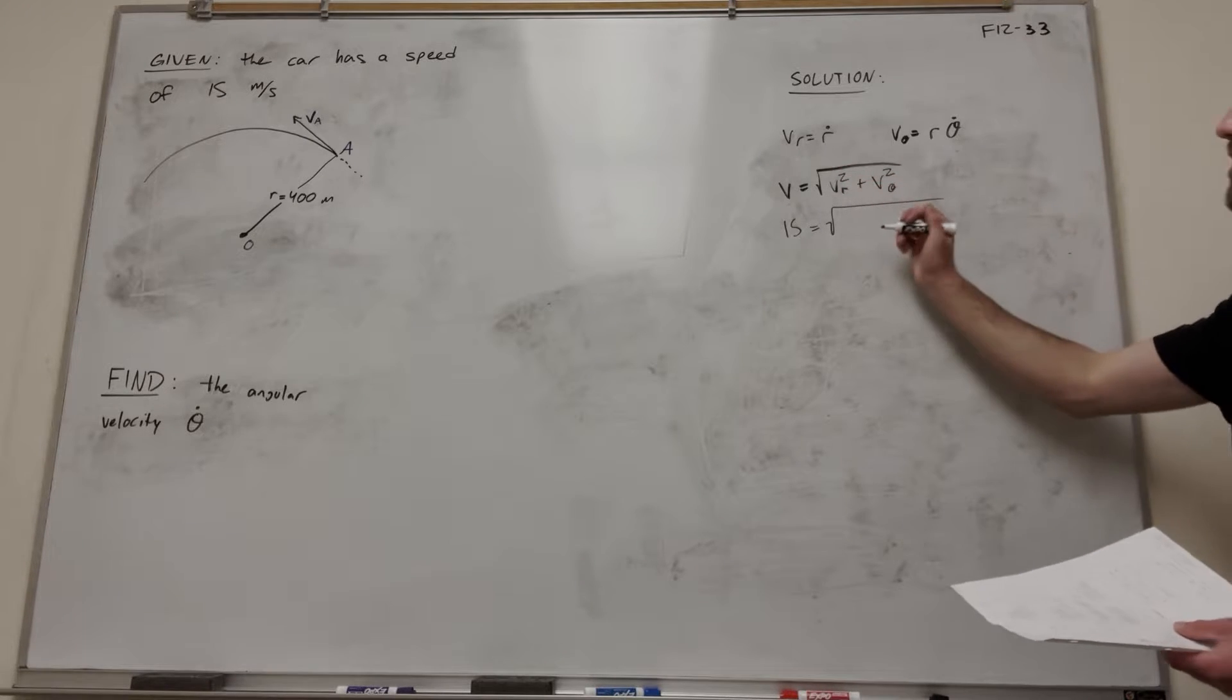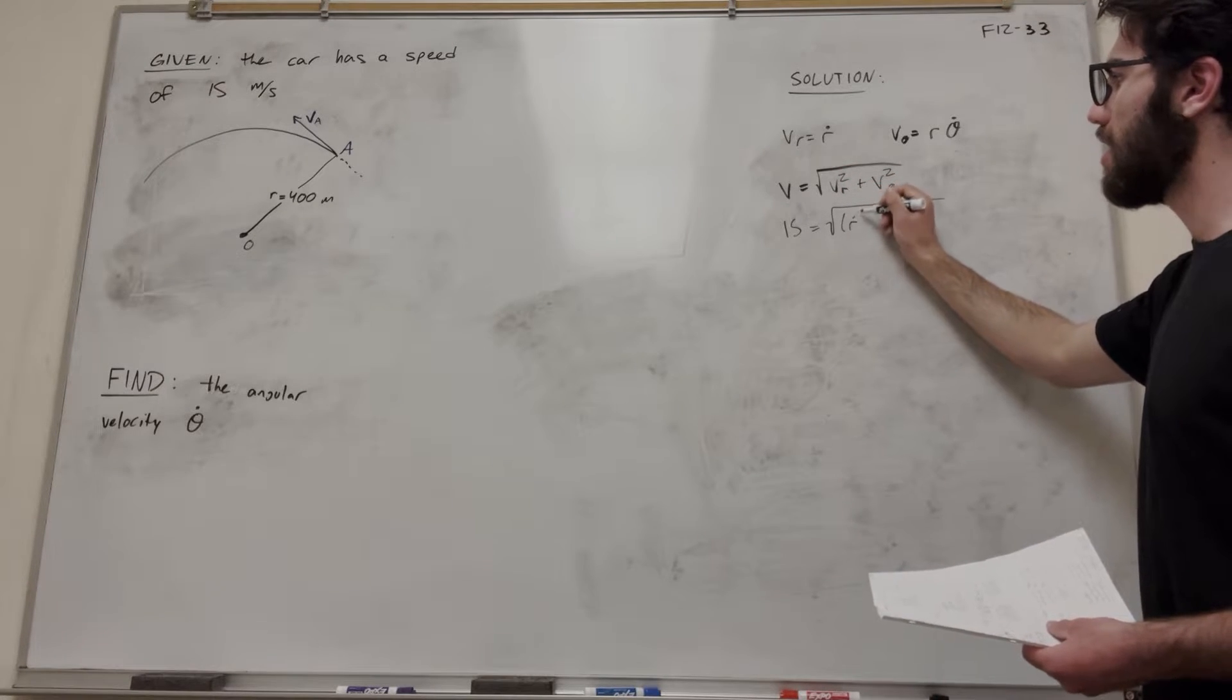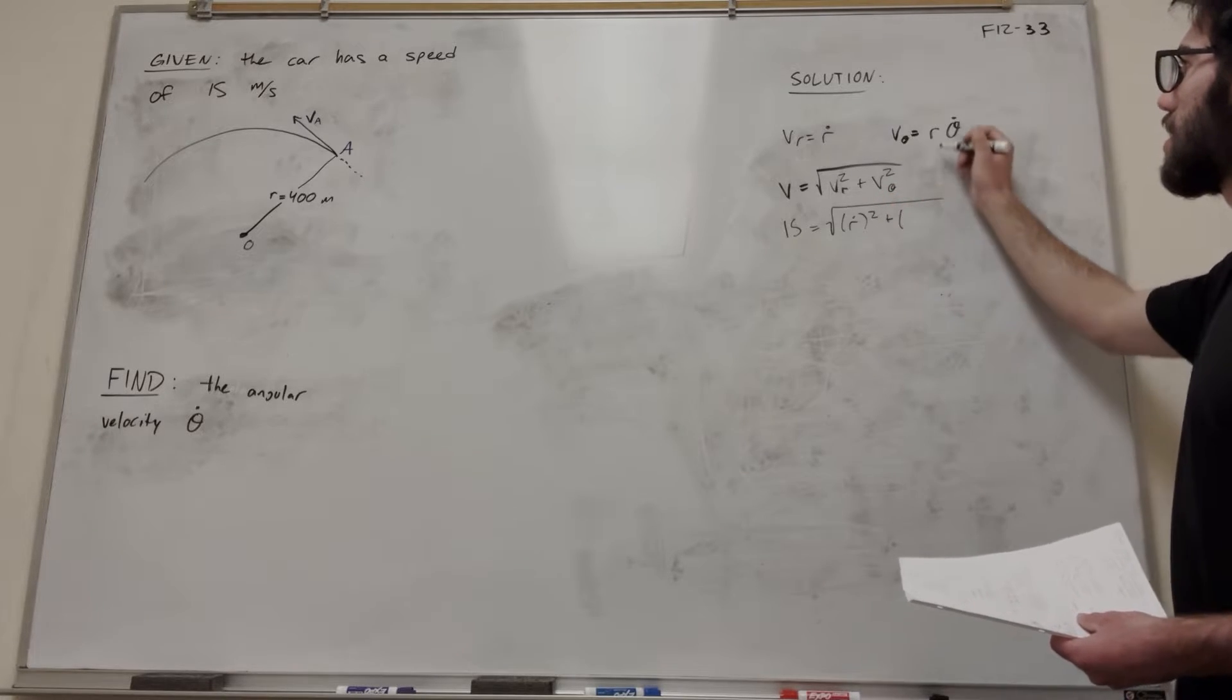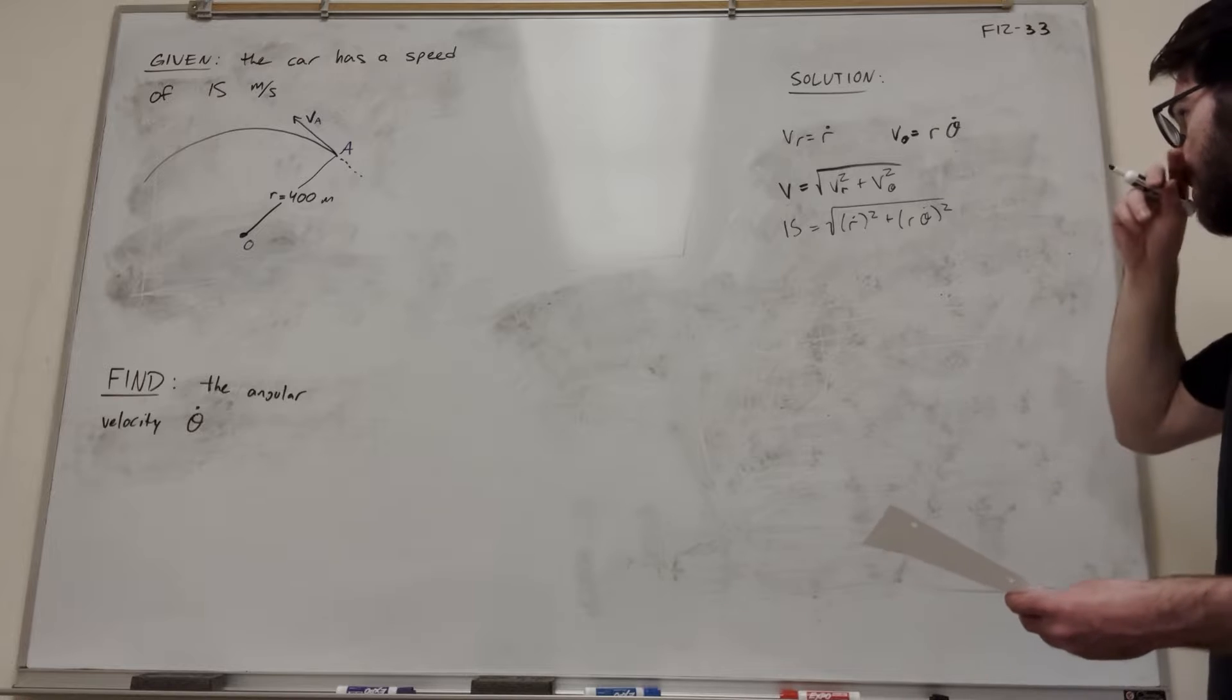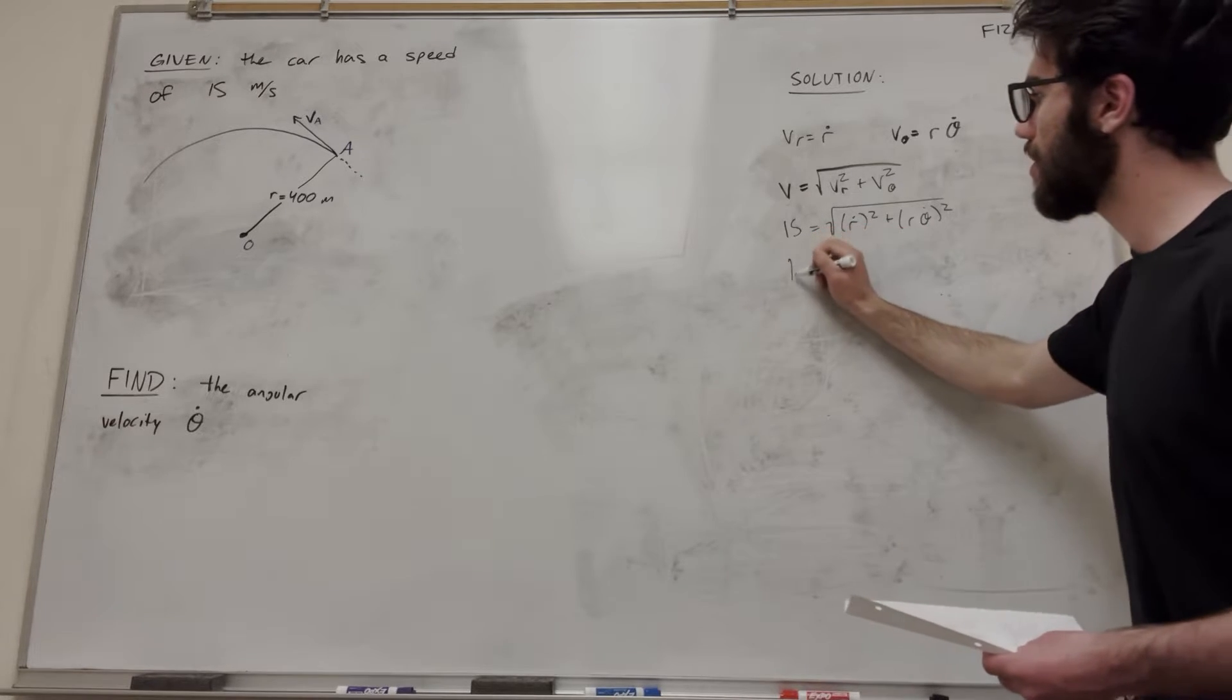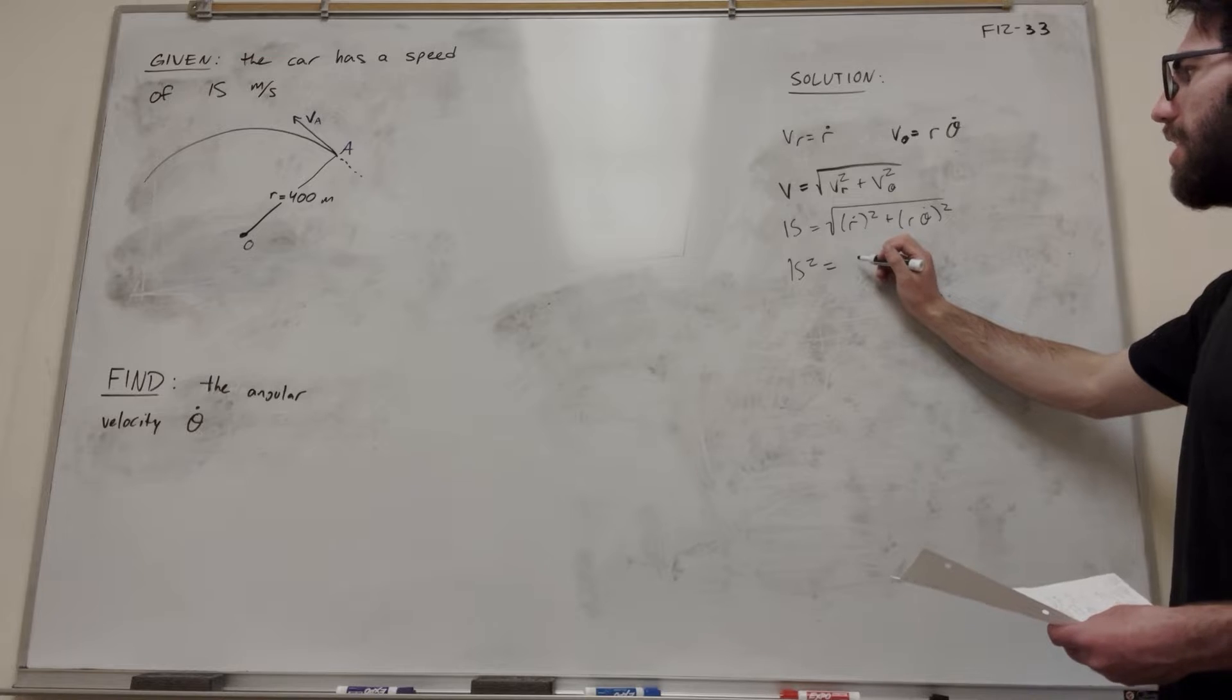So let's plug into these. It's going to be r dot squared plus r theta dot squared. So we have this equation here. Let's get rid of that square root by squaring both sides. And let's figure out what these are.